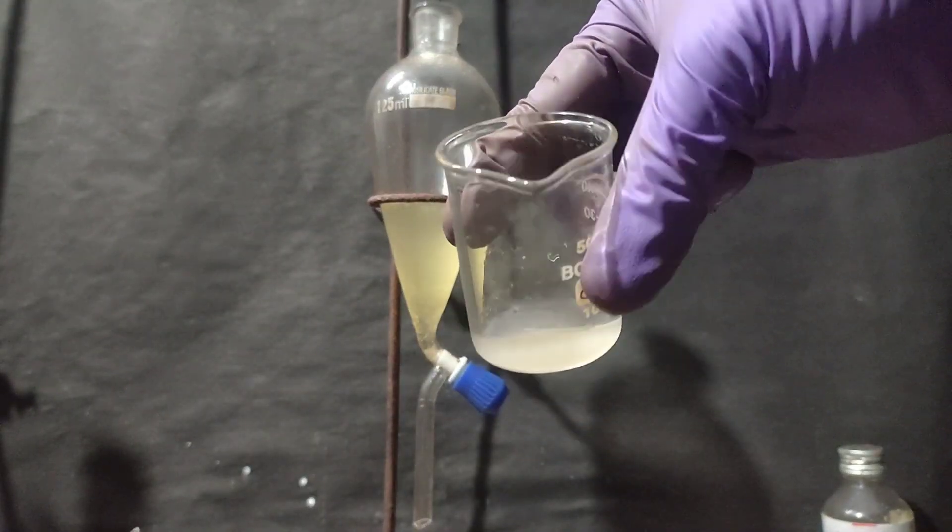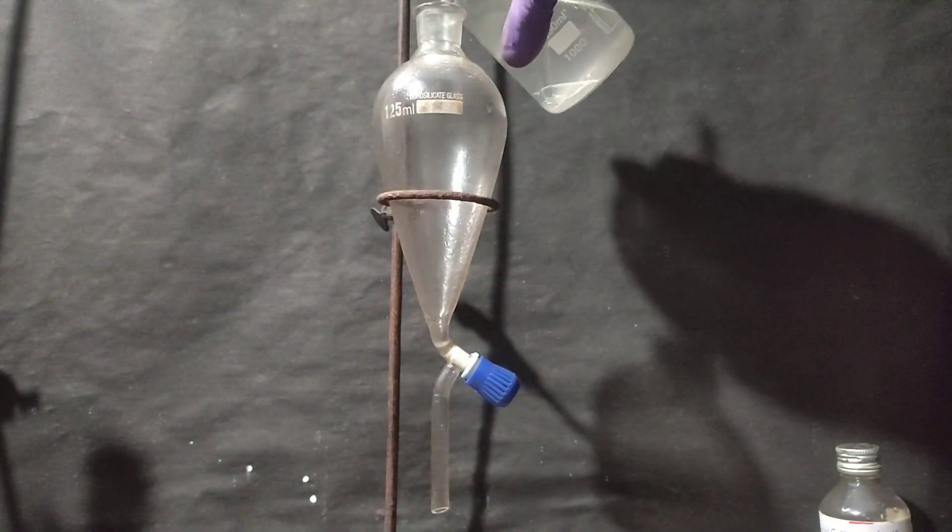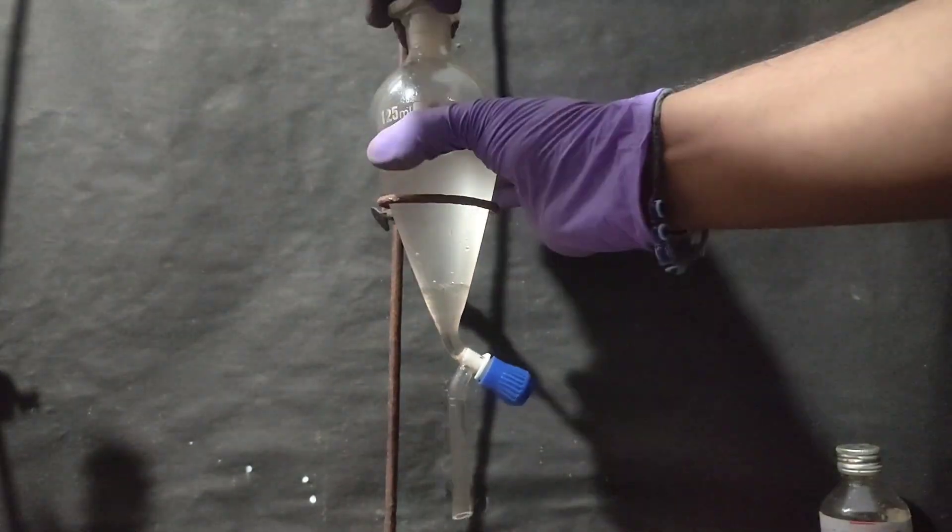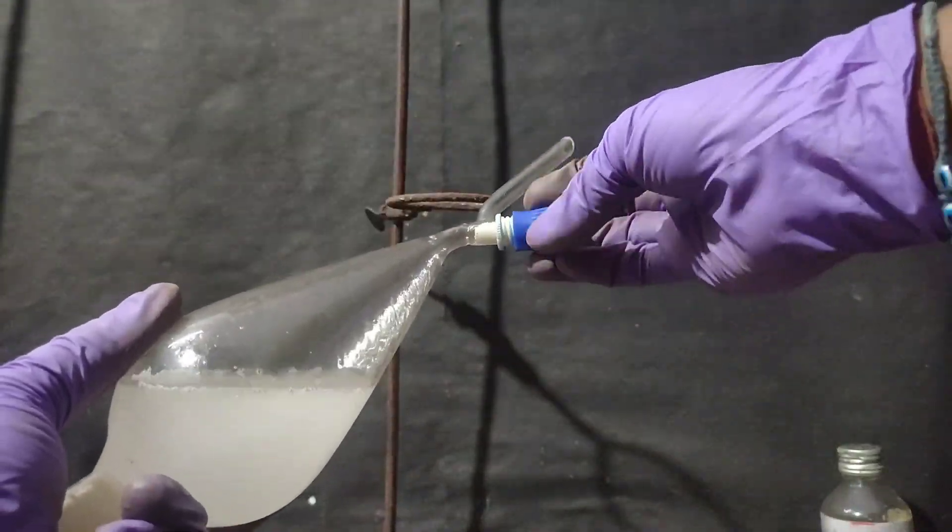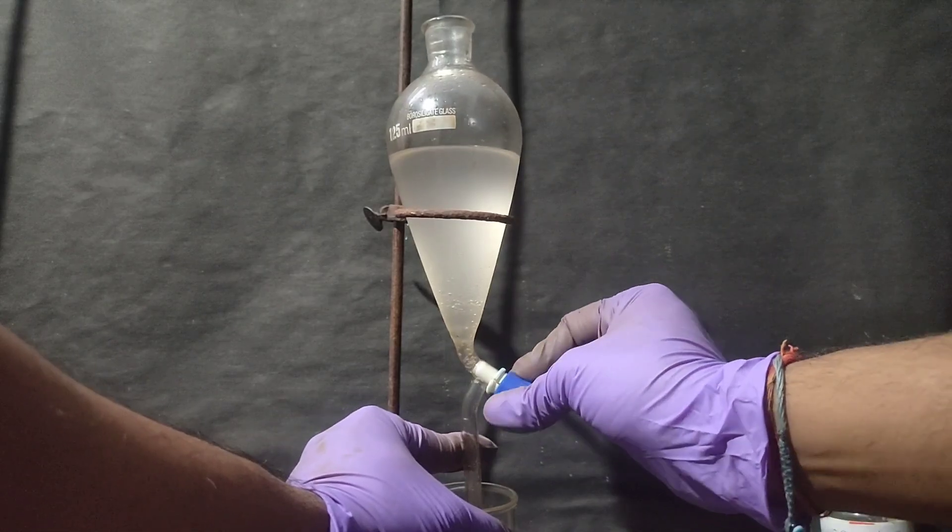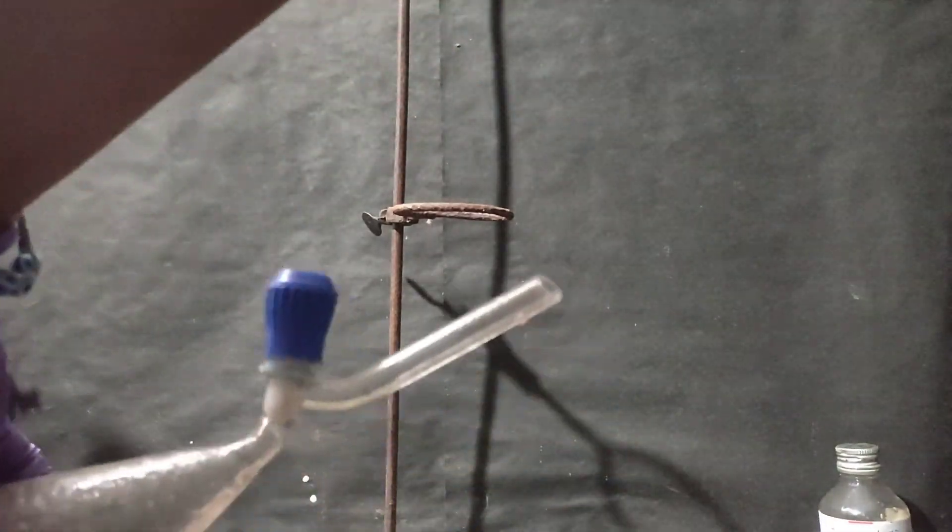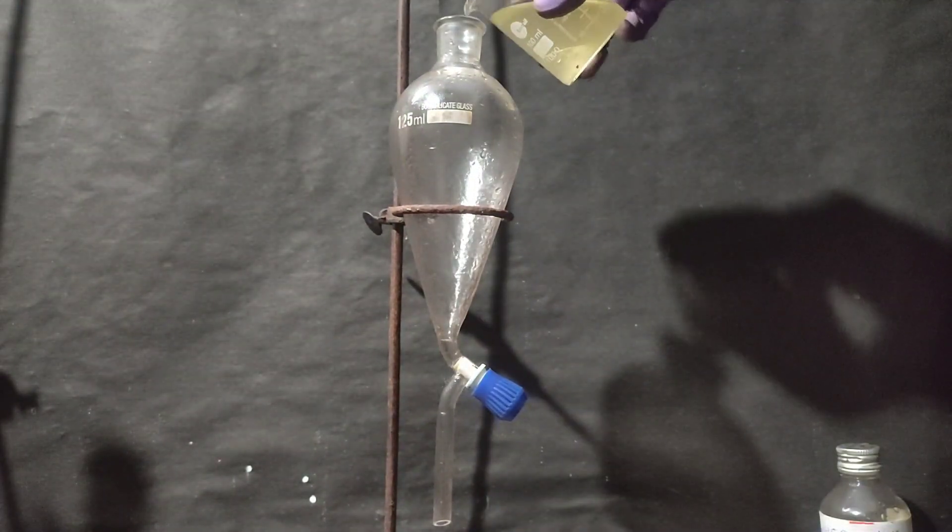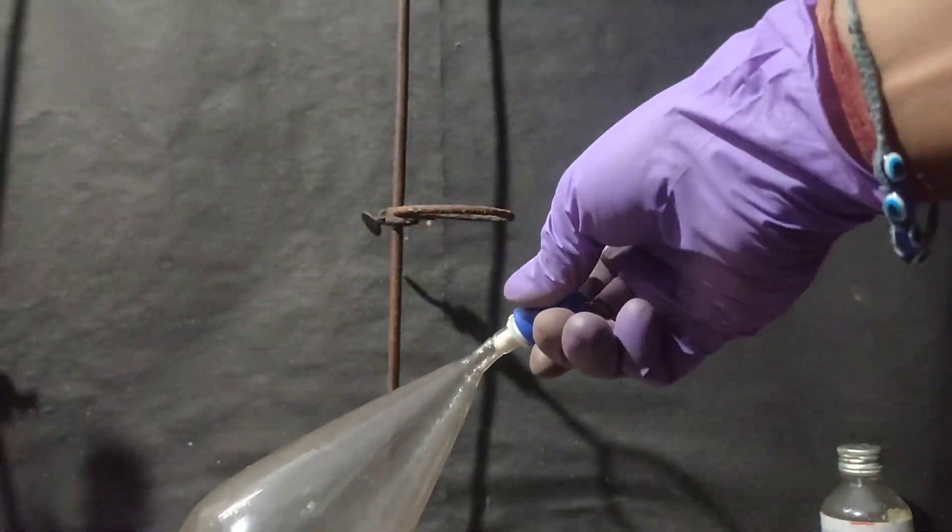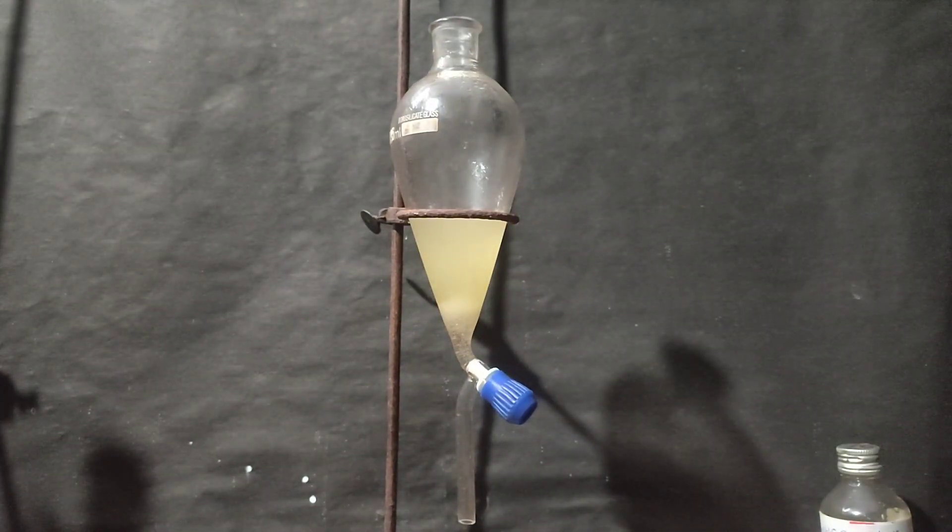Then I again added the acid aqueous layer to which some DCM was added off camera into the separatory funnel. It was capped, shaken and vented. The lower DCM layer was drained off in the beaker containing sodium bicarbonate solution. And then after emptying the separatory funnel, I poured the contents in it. In this way, I would extract most of TNG and also keep the DCM minimal because the more we use, the more time it would take to evaporate. This DCM was combined with TNG.